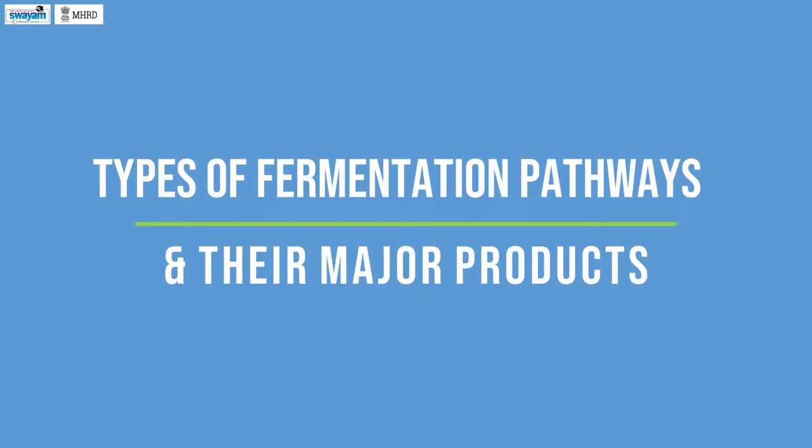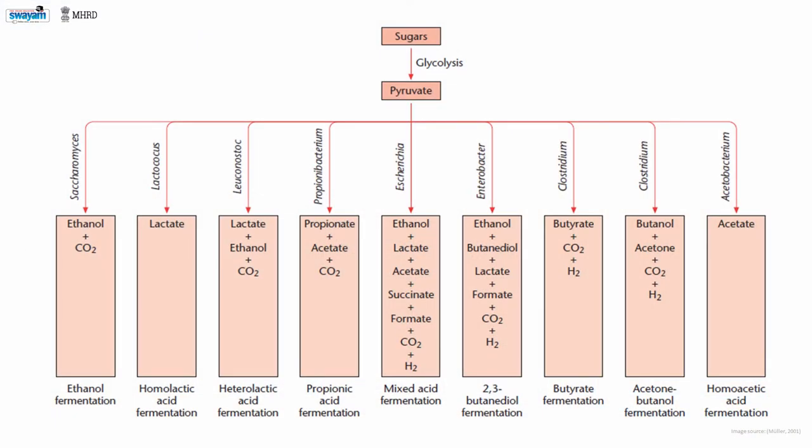Types of Fermentation Pathways and Their Major Products. Fermentation is classified into the following types based on the products formed from these pathways.